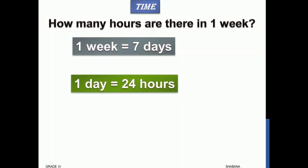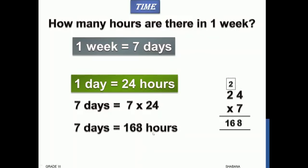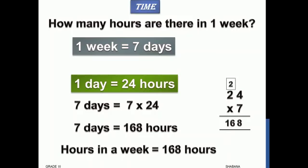One day is equals to 24 hours. So to find how many hours are there in seven days, we have to multiply seven with 24. We start multiplying from ones place — seven fours are 28, and then seven twos are 14, 14 plus 2 is 16. So 168 hours. Seven days has 168 hours, so hours in a week is equals to 168 hours.